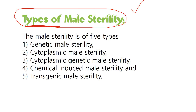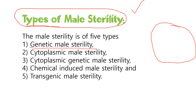There are basically five types of male sterility. The first is genetic male sterility. Before going into the types, here's an overview of the structure of a plant cell. Imagine this is a plant cell — this is the nucleus. Sterility is always determined by a recessive gene.